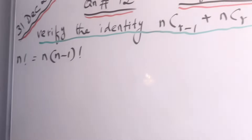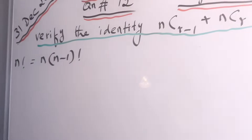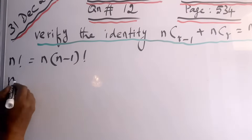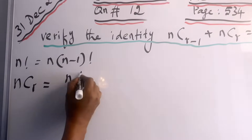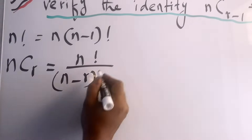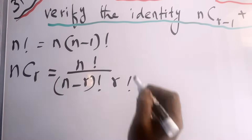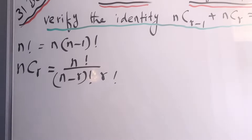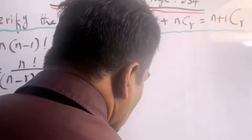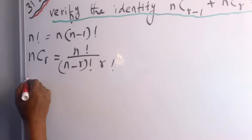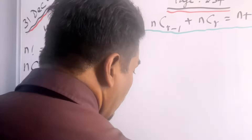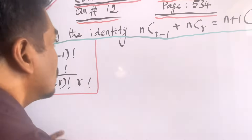There are two important formulas. First: n factorial equals n times (n-1) factorial. Second: nCr equals n factorial over (n-r) factorial times r factorial. We will highlight these two formulas and then work on the left-hand side of the identity.